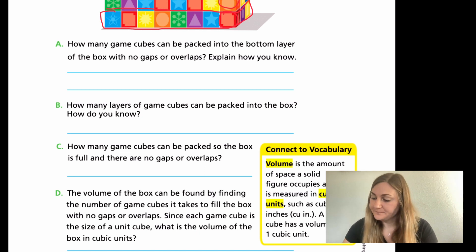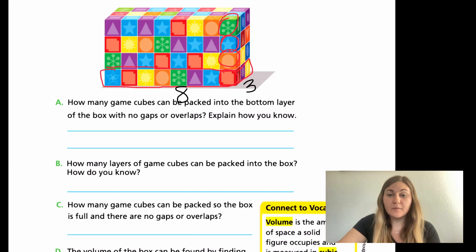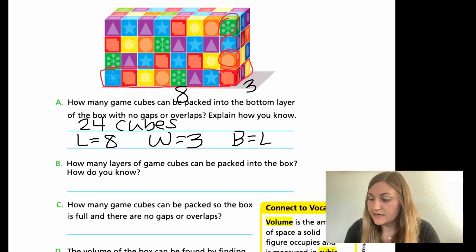Coming back, let's solve these four questions. For A, how many game cubes can be packed into just the bottom layer of the box with no gaps or overlaps? Explain how you know. In the bottom layer, I know that I have 1, 2, 3, 4, 5, 6, 7, 8 across, and then I have just three wide. So my length times my width, finding the base, length times width is 8 times 3, and I know that 8 times 3 is 24. So I'm going to have 24 cubes. And then explain how you know, you can say because you knew that your length was equal to 8 and your width was equal to 3, and you know that your base equals length times width.